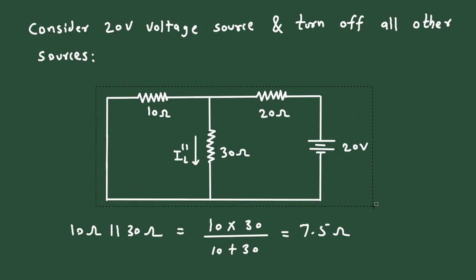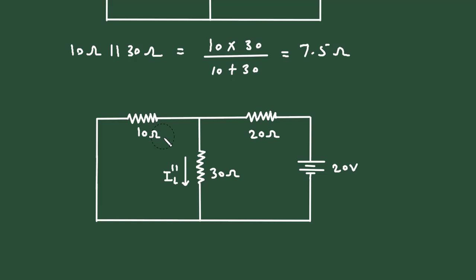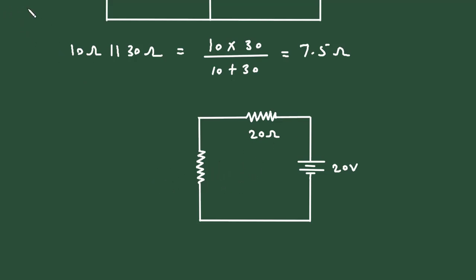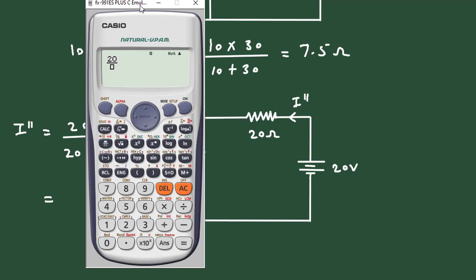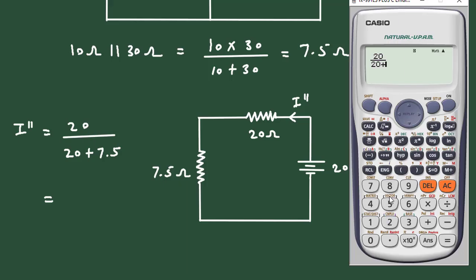Again we copy the circuit and replace the parallel combination with a single 7.5 Ohm resistor, calling the total current I double prime. By Ohm's law, I double prime equals 20 divided by 20 plus 7.5 Ohm, which gives 0.72 ampere.